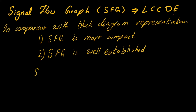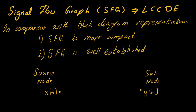In SFGs we have a source node, represented by this circle, and we have a sink node, which is this circle over here. The source node is the node where you input the signal, and in between the source node and the sink node we have intermediate nodes, which we can refer to as w1(n) and w2(n).